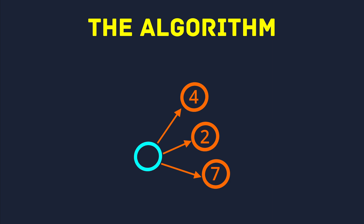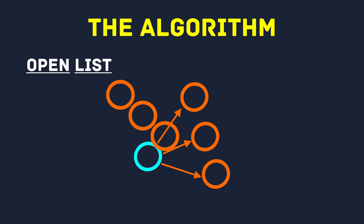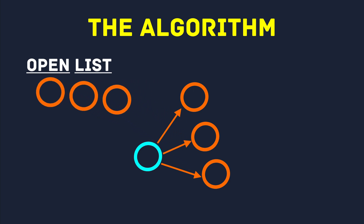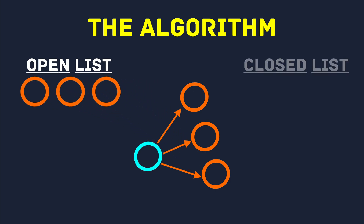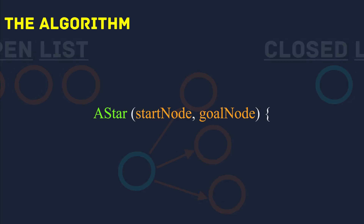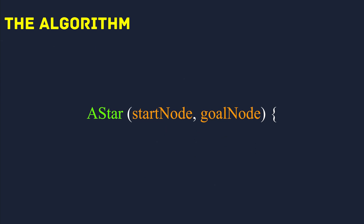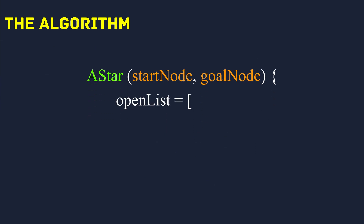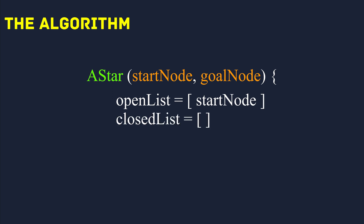To do this, A* maintains two lists of nodes: an open list, which contains all the nodes that are yet to be expanded, and a closed list, which contains all of the nodes that have already been expanded. Initially, we pass a node to start from and a goal node to reach. We initialise the open list with the start node as its only element, and create an empty closed list and an empty final path list.